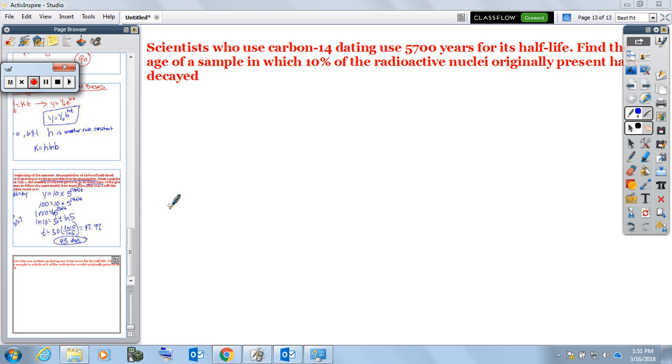Let's take a look. The scientists who use carbon-14 dating use 5,700 years for its half-life. Find the age of a sample in which 10% of the radioactive nuclei originally present have decayed.